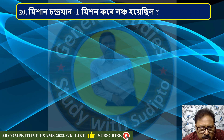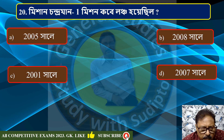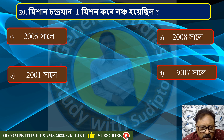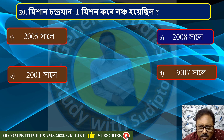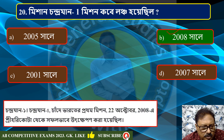When was Chandrayaan 1 launched? Options: 2005, 2008, 2007. The first mission of Chandrayaan 1 was launched on 22 October 2008.